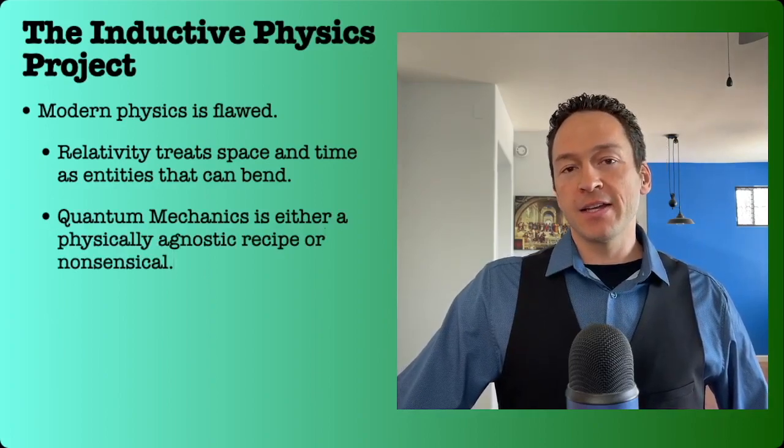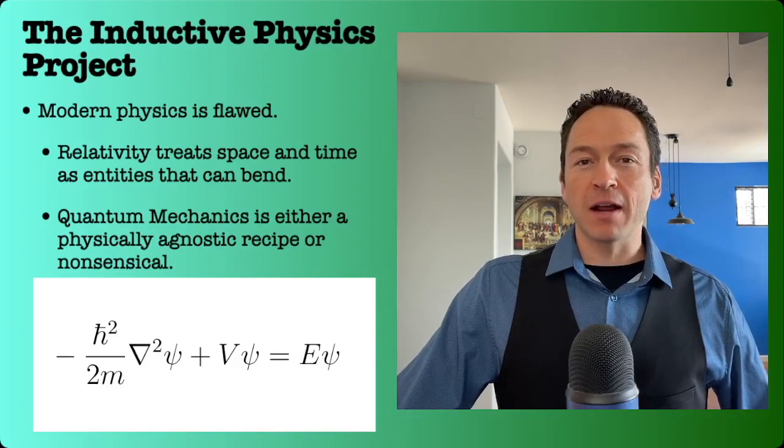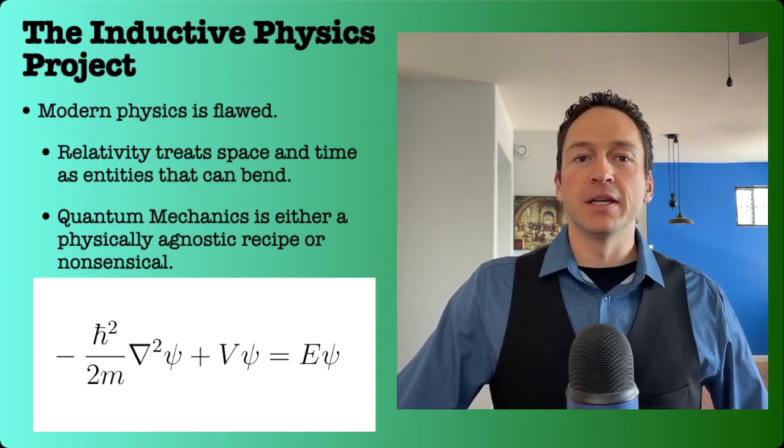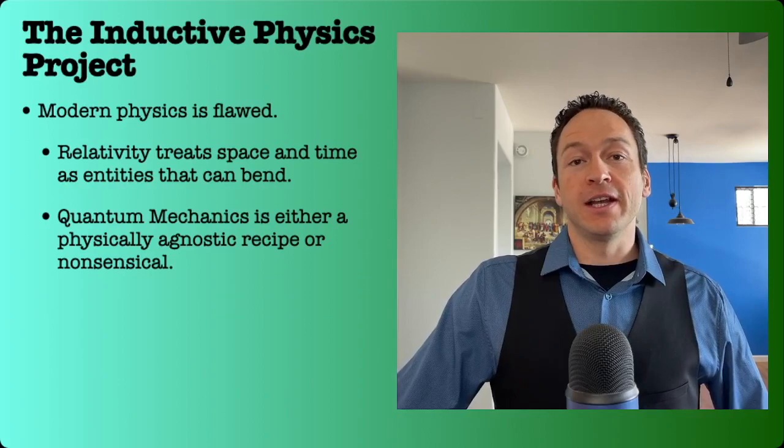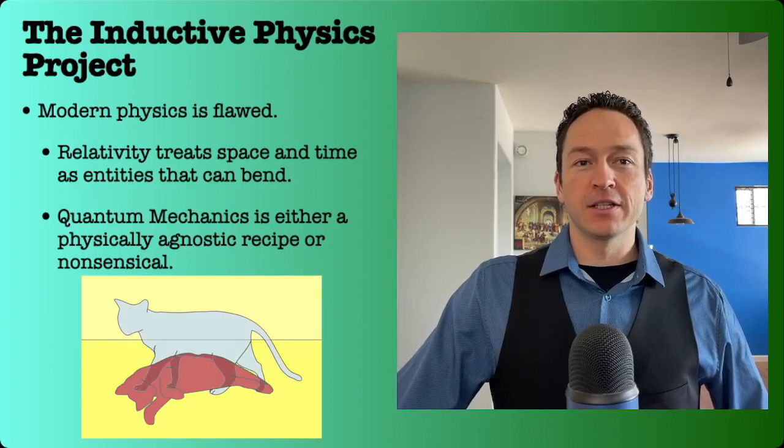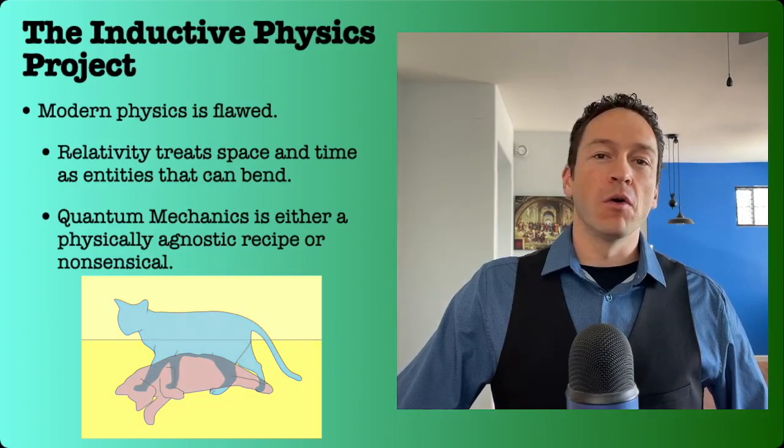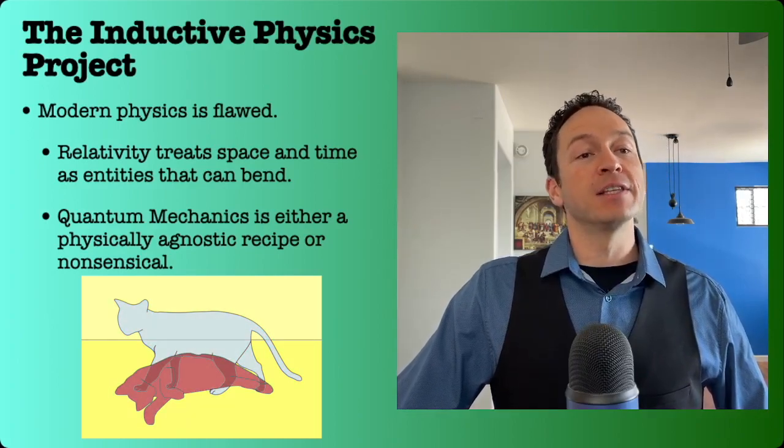Quantum mechanics, on the other hand, is at best an abstract mathematical tool for making predictions which lacks any physical meaning. Or at worst, it has an absurd physical meaning. It describes entities as being in multiple places at once or as being particles and waves at the same time.